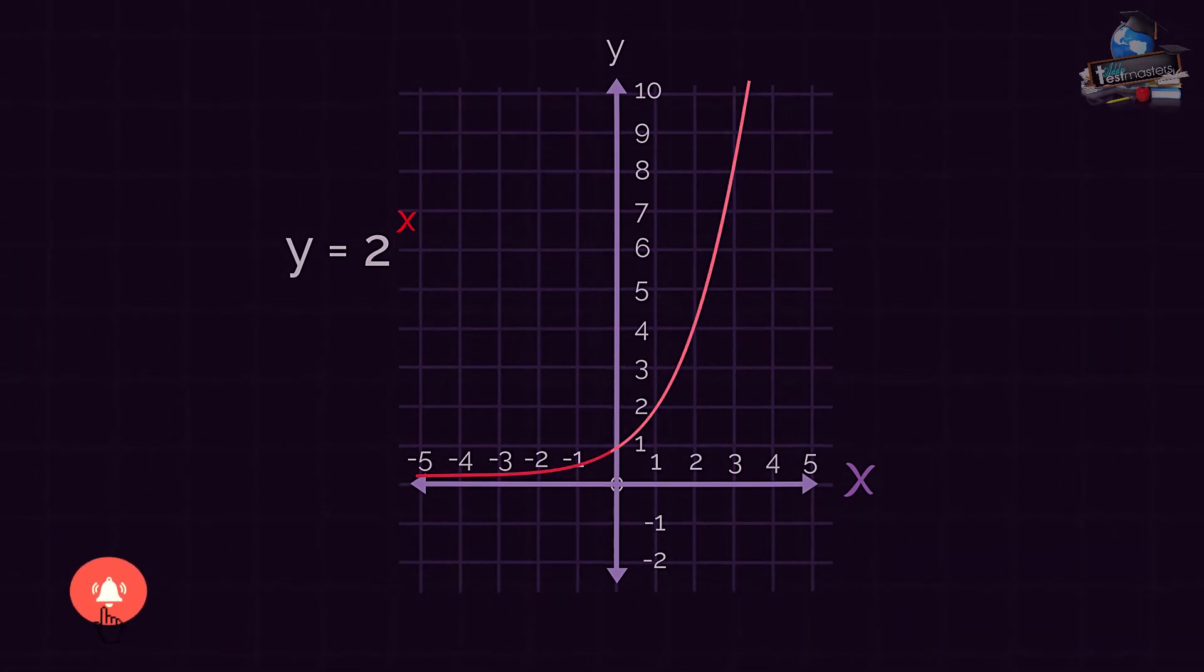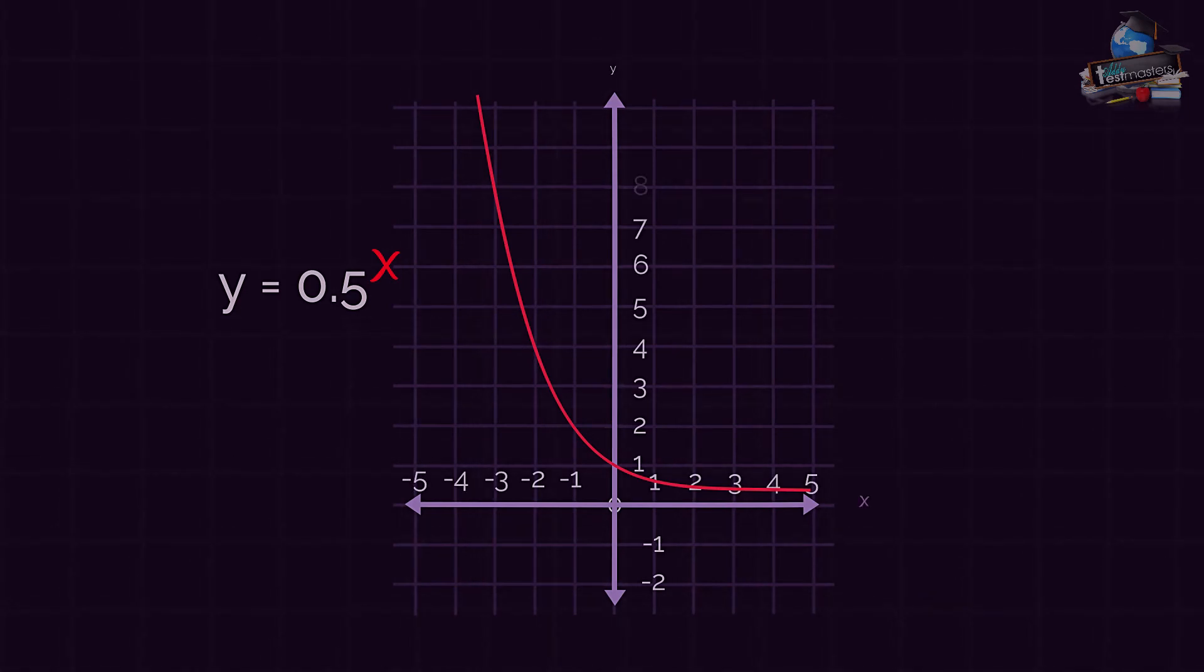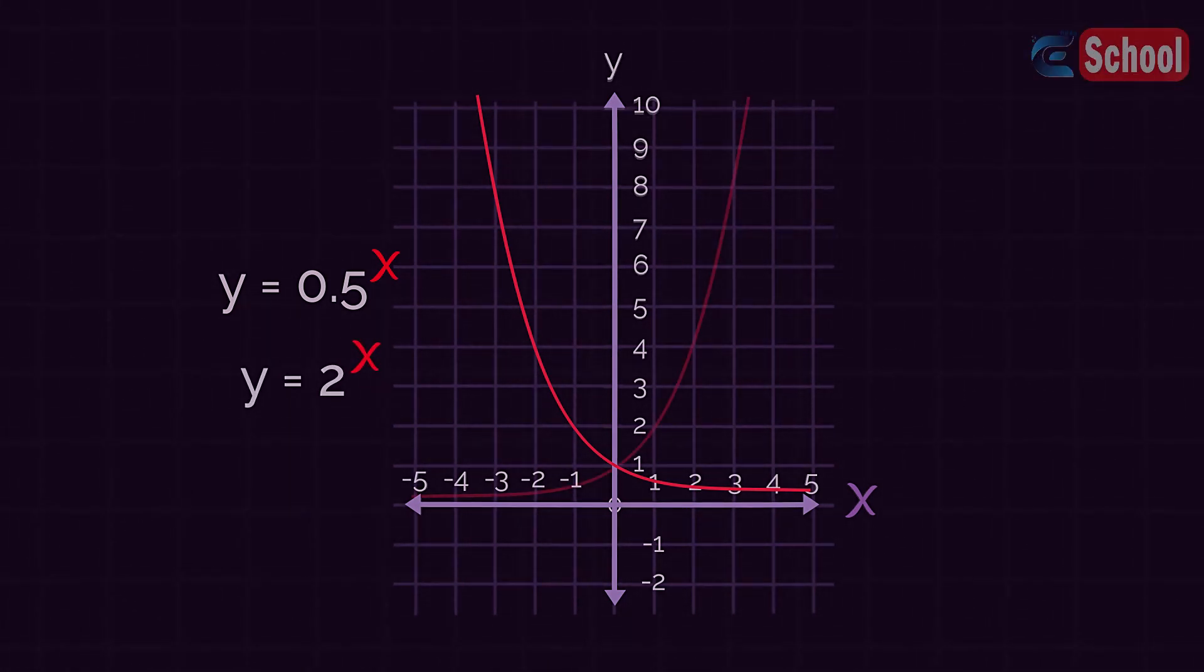Whereas if we have y equals 0.5 to the x, for example, or any value between 0 and 1, the exponential graph would look like this. So it's just reflective. But again you don't need to worry about remembering this exactly. Just be aware that exponential graphs can be flipped.